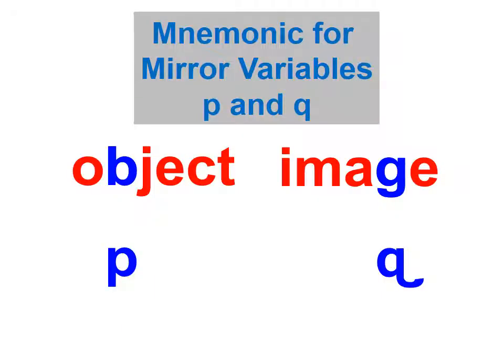We can also remember that the object distance is symbolized in our equation by p, the image distance is symbolized by a q, and there's a little p in the word object and a little q in the word image if you manipulate a certain letter carefully.